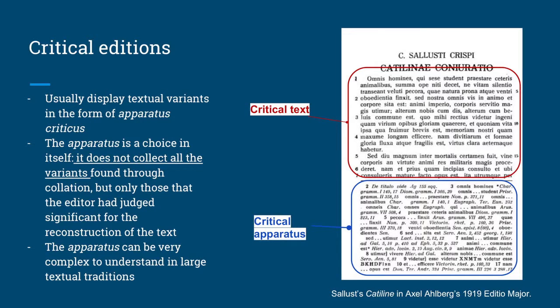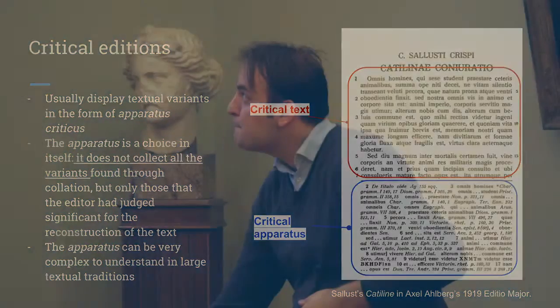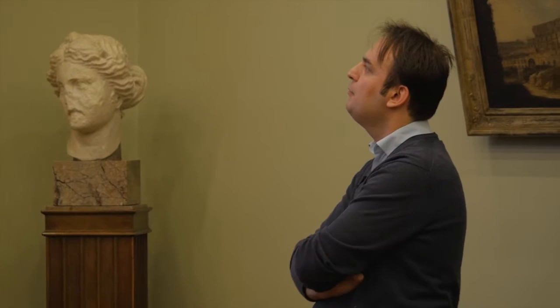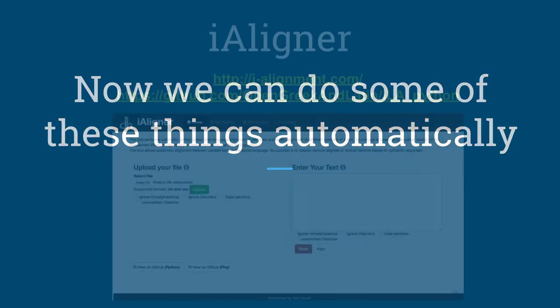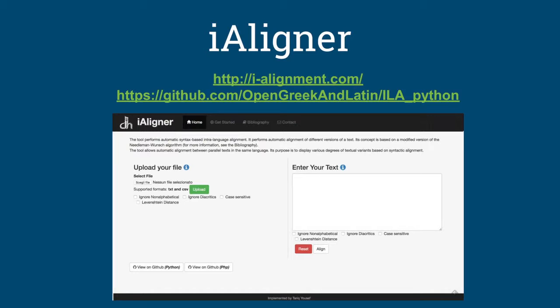Now we can do some of these things automatically. We will present how we can do alignment automatically — it is our tool, e-aligner. The tool is available at the URL e-alignment.com, and the Python implementation is available on GitHub. We are working to make it available as a desktop application and command line tool, and it will also be available in PHP and Java. The work is in progress — we just started three months ago.